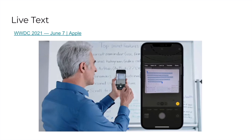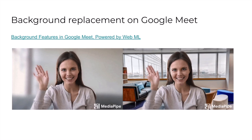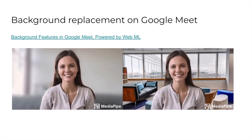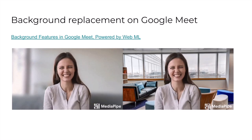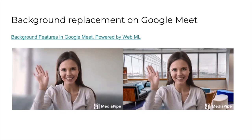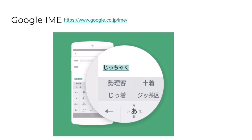Live Text — it was introduced in iOS 15. It allows you to easily copy and paste text from photos taken with your iPhone without any additional operation. Background replacement on Google Meet — I guess many people are using this. This is a widely used client-side ML feature all over the world. You can replace or blur your background in an online meeting. Google IME is a familiar feature for Japanese users — it will suggest appropriate words depending on the context you are typing.